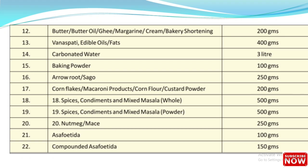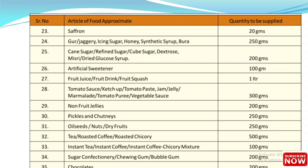Continuing the sample quantity table: butter 200 g; vanaspati 400 g; carbonated water 3 liters; baking powder 100 g; arrowroot, sago 250 g; cornflakes 200 g; spices, condiments, and mixed masala 500 g; nutmeg 250 g; asafoetida 100 g; compounded asafoetida 150 g; saffron 20 g; jaggery, icing sugar, honey, synthetic syrup 250 g; cane sugar, refined sugar, cube sugar 200 g; artificial sweetener 100 g; fruit juice, fruit drink, fruit squash 1 liter; tomato sauce, ketchup, tomato paste, jam, jelly, marmalade, tomato puree, vegetable sauce 300 g; non-fruit jellies 200 g.